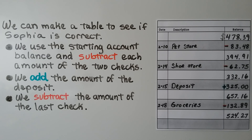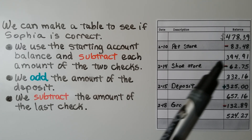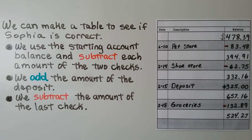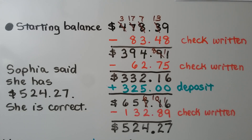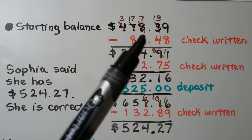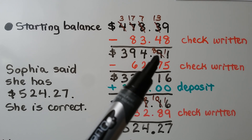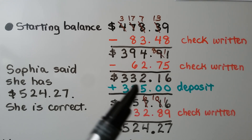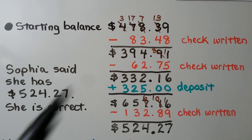We can make a table to see if Sophia is correct. We use the starting account balance and subtract each amount of the two checks, add the amount of the deposit, and subtract the amount of the last check. Starting at $478.39, we subtract the check for $83.48 using regrouping and get $394.91. We subtract her next check using regrouping and get $332.16.